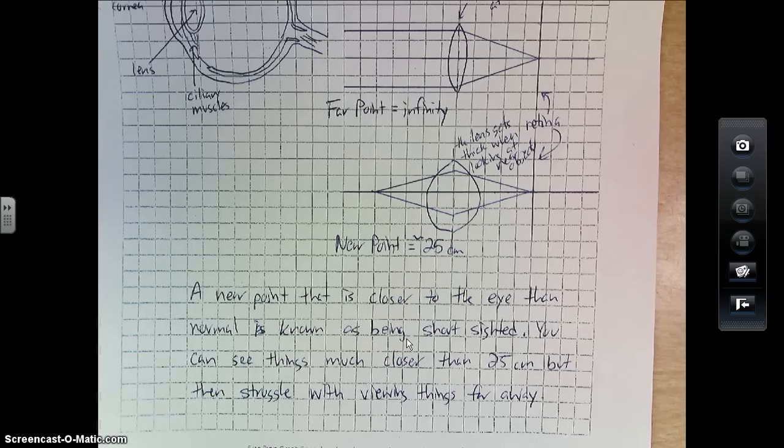However, generally, you have a harder time seeing things that are far away. And then far-sighted would be the opposite of that. You can see things that are farther away but struggle more with things that are closer than 25 centimeters.